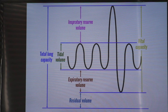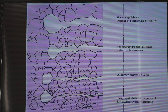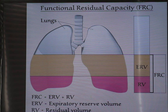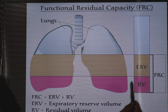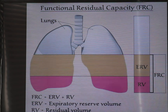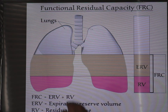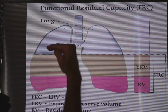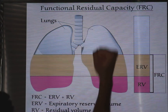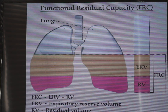Now let's move to the functional residual capacity and what factors can affect it. The functional residual capacity is the addition of the expiratory reserve volume and the residual volume. It can be decreased by anything that pushes the lung upward and closes the alveoli.